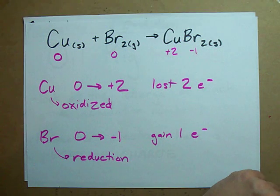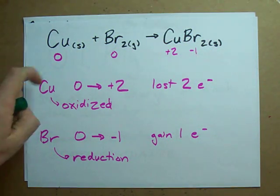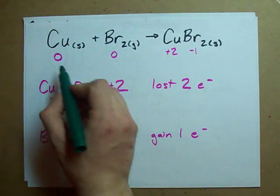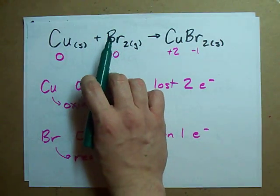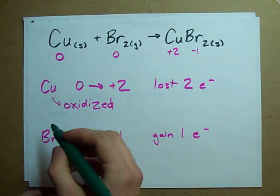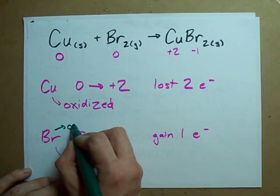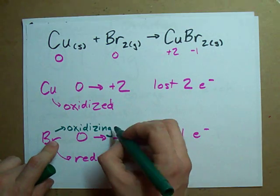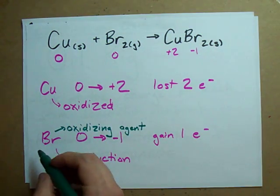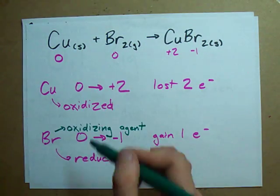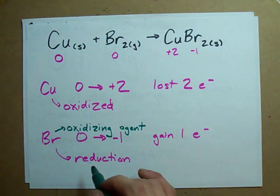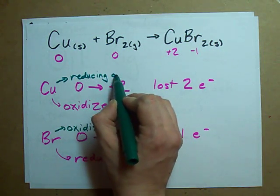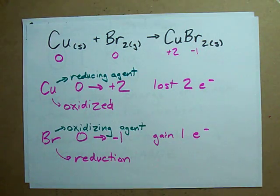One thing I want to point out is that if copper was oxidized, what caused that oxidation? We say that the thing that caused it to oxidize — in this case, the only other reactant that could have caused it — we call that the oxidizing agent. It causes the other atom to be oxidized. The reactant that is reduced is usually the oxidizing agent, and the atom that was oxidized caused a reduction to happen — it's called the reducing agent.